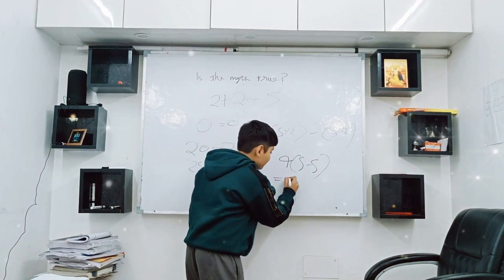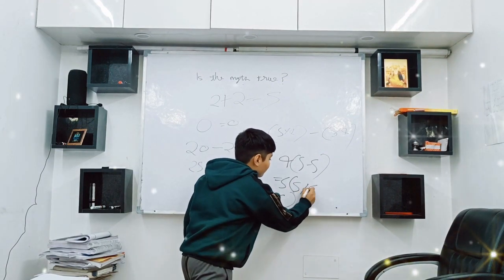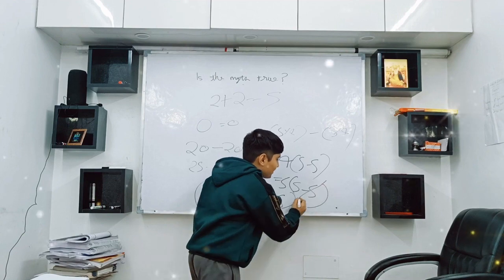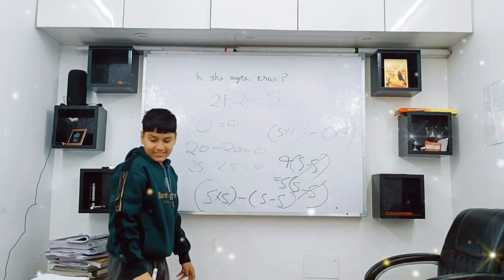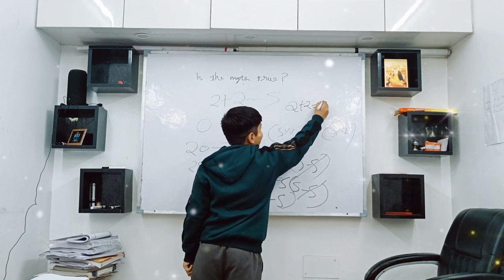If we have done this, 5 minus 5 is equal to 5 times 5 minus 5. We will cancel these terms. Now what happened? 2 plus 2 is equal to 5.